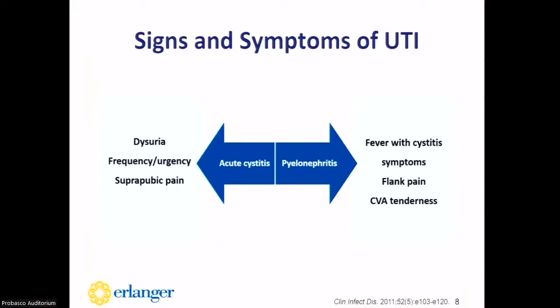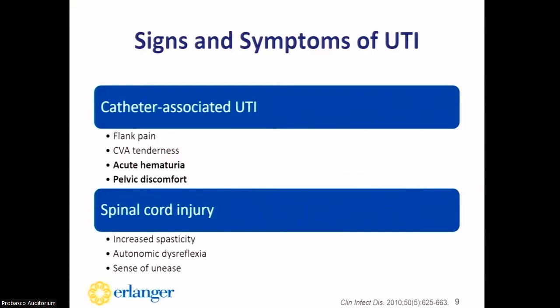Some patient populations are not as straightforward—such as patients with catheter-associated UTI or spinal cord injury. Catheter patients may also present with acute hematuria and pelvic discomfort. The most difficult population to diagnose with a true UTI is spinal cord injury patients, because they often cannot report acute urinary symptoms. These patients may have increased spasticity or a sense of unease, so systemic signs and symptoms such as an elevated white blood cell count and fever must be considered.